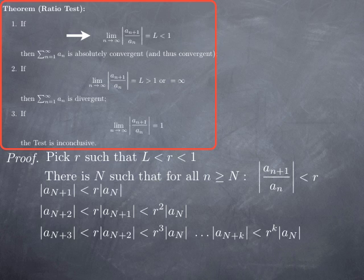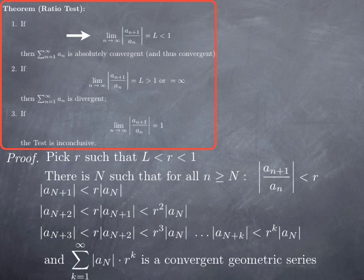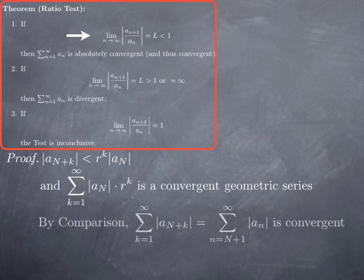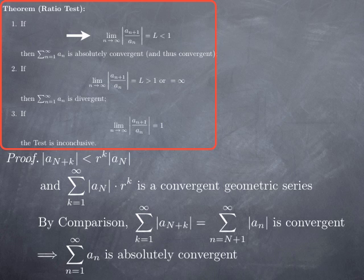Since r is less than 1, the right-hand side is the general term of a convergent geometric series of common ratio r. By comparison, the series from 1 to infinity of |a_{N+k}| is convergent — that's just the series of |a_n| starting at N+1. Adding the first N terms (a finite number) doesn't change convergence, so the series from 1 to infinity of |a_n| is convergent. In other words, the series is absolutely convergent.